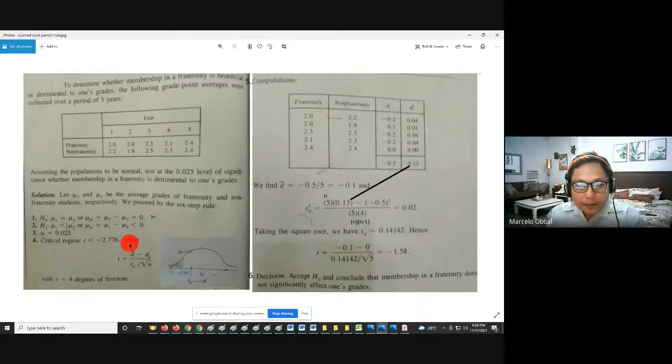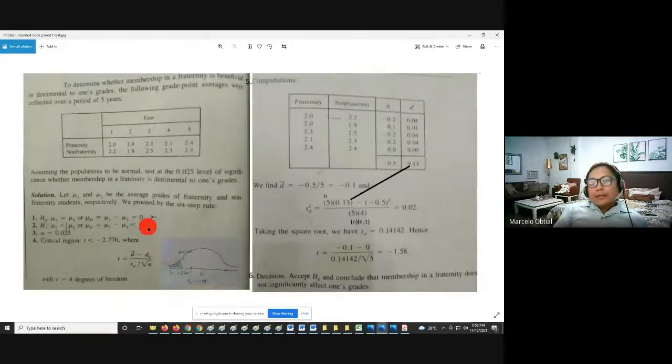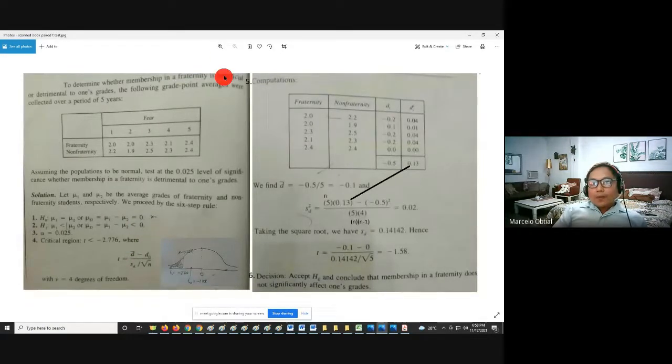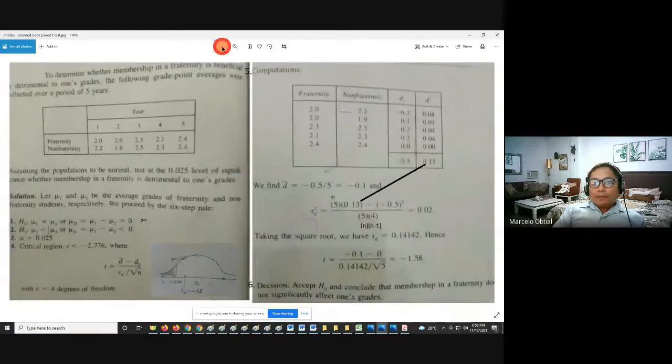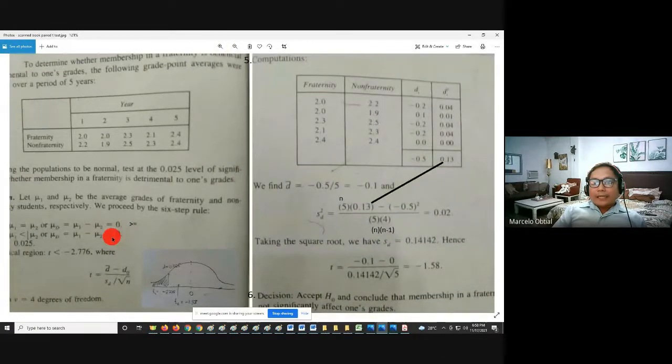That is why, negative 2.776. Sir, bakit negative? Alimutan ko. Yung ating basis sa pag-drawing is always your step number 2. Remember, this is less than. Imagine this is tip of the arrow. It will instruct you, it should be pointing to the left. That is why left. Yung value natin kanina sa T-distribution table is positive. Assume directly, it should be negative. Why, sir? Kasi nga, nasa left side yung ating shaded portion. That is why it should be negative 2.776, not positive. So, after that, we can now proceed with the step number 5, the computations. Using the formula, again.